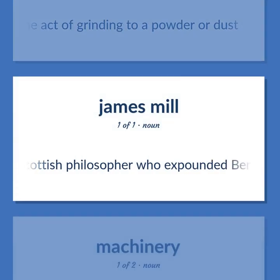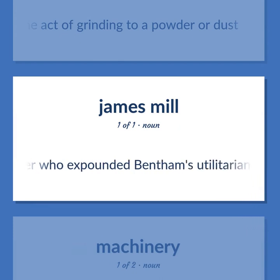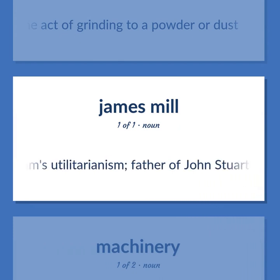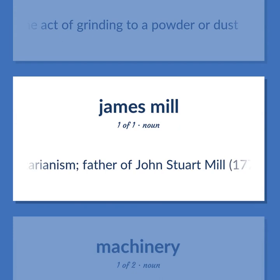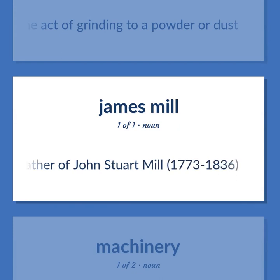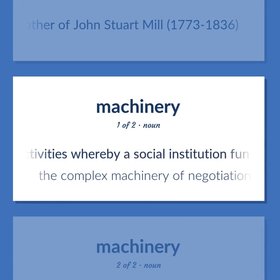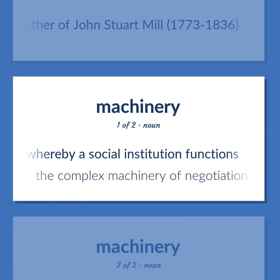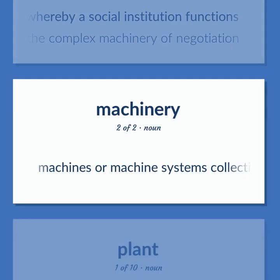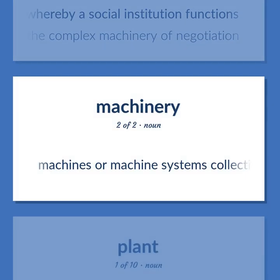James Mill — Scottish philosopher who expounded Bentham's utilitarianism, father of John Stuart Mill. Mill: a system of means and activities whereby a social institution functions — the complex machinery of negotiation; machines or machine systems collectively.